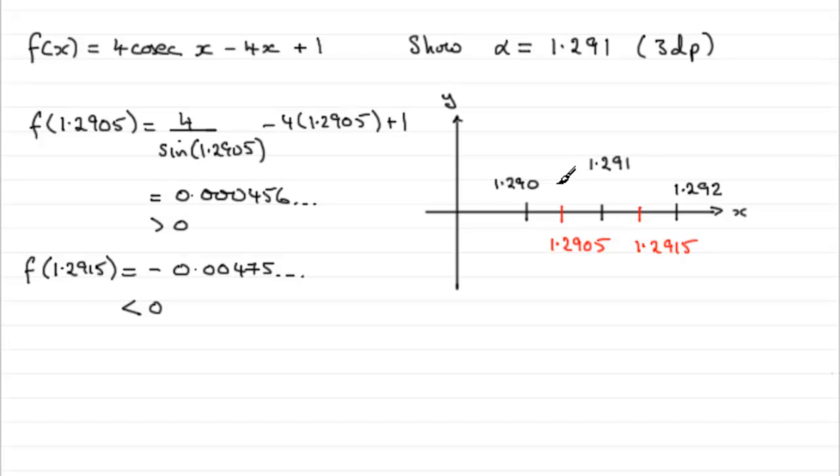So, clearly then our graph is coming down through here, something like that. So, it's going to be closer to the 1.291 to three decimal places. So, just to summarize, you could just say that therefore, since the change in sign, we could say that alpha equals 1.291 to three decimal places.